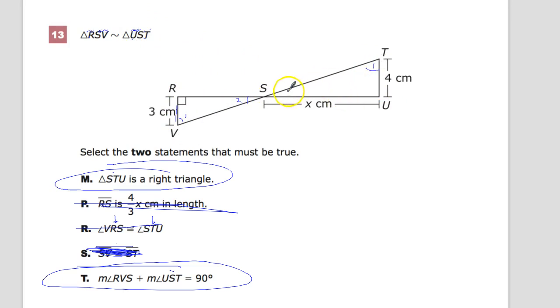So by default, this would have to be angle 2. So since I have RVS, which is angle 1, and UST, which is angle 2, 1 plus 2 is equal to 90 degrees. So that's there as well.